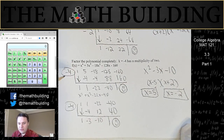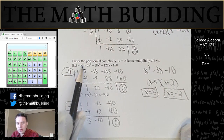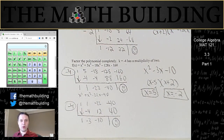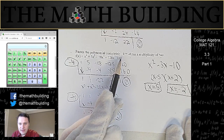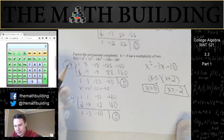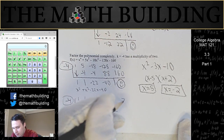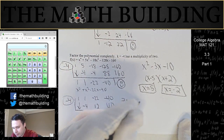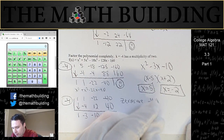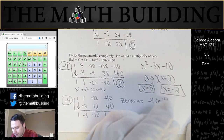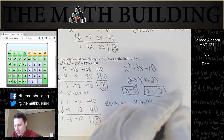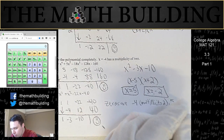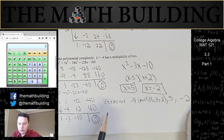We have four answers: negative 4 with multiplicity 2, 5, and negative 2. The degree was 4, so we know we're done — the fundamental theorem of algebra tells us we're done. So the zeros are negative 4 with multiplicity 2, 5, and negative 2.